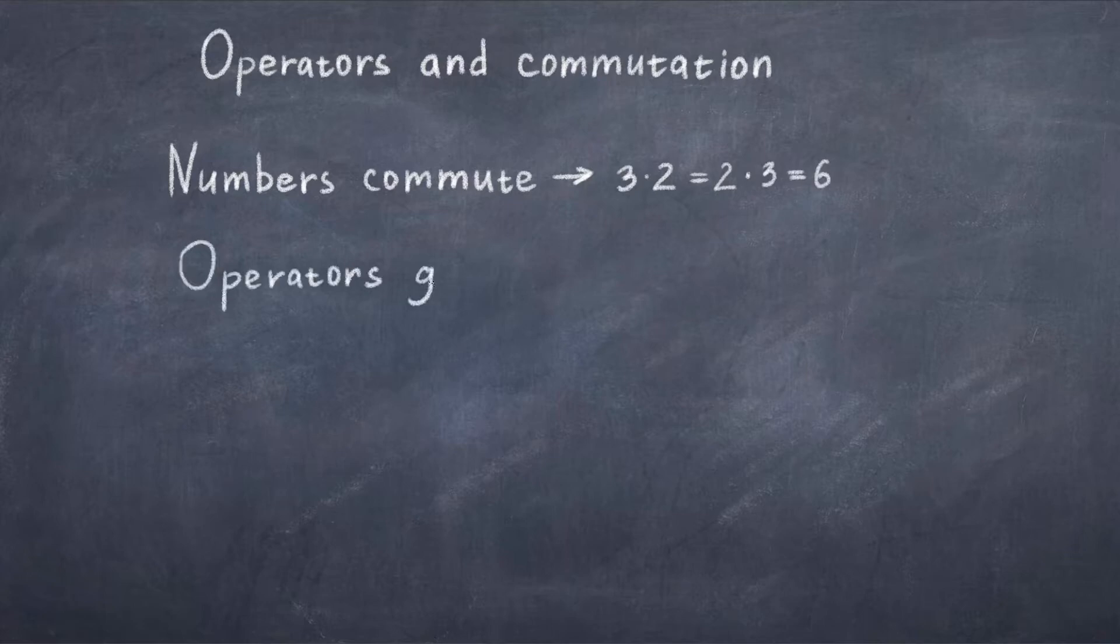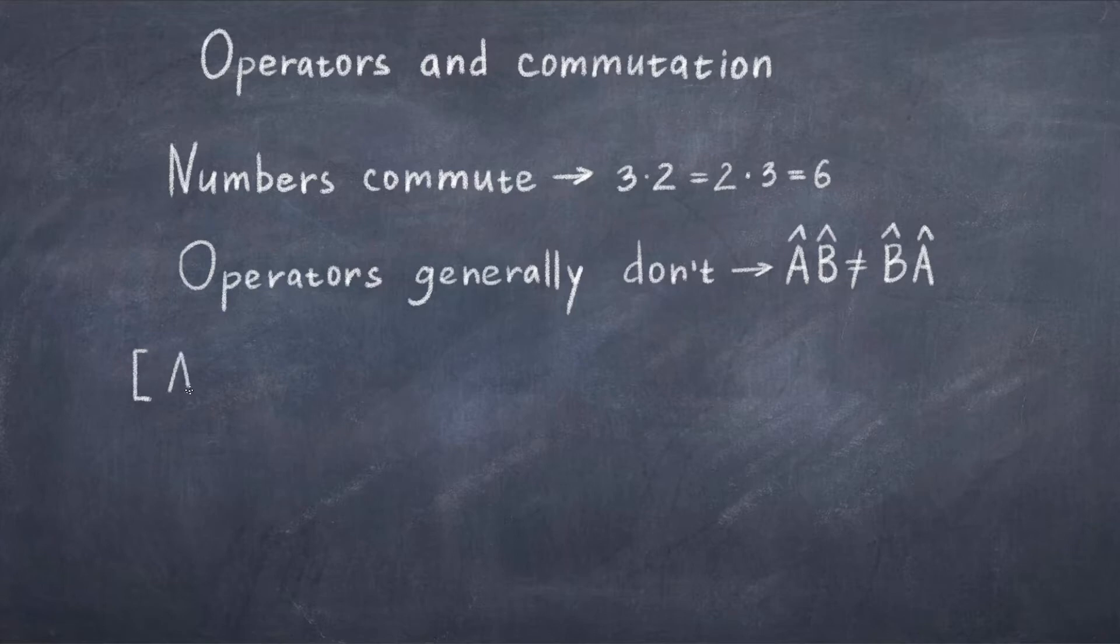Numbers are simple because it doesn't matter in what order you consider multiplication. As an example, 3 times 2 is equal to 2 times 3 and it's equal to 6. When it doesn't matter what way around you multiply your objects, then objects commute. Numbers always commute, which make them simple.